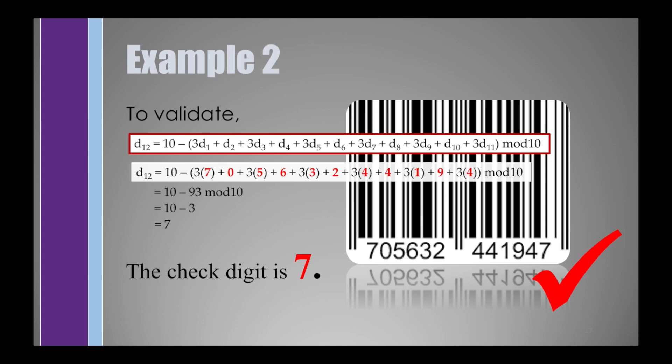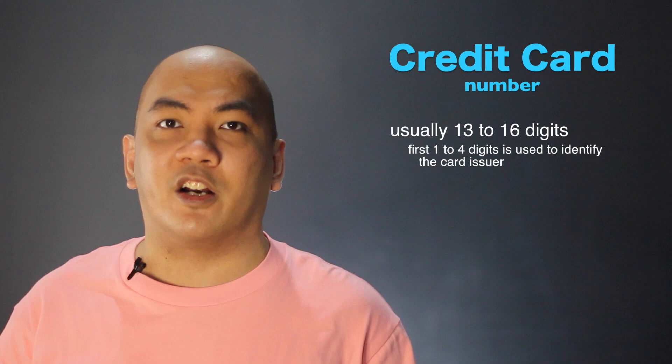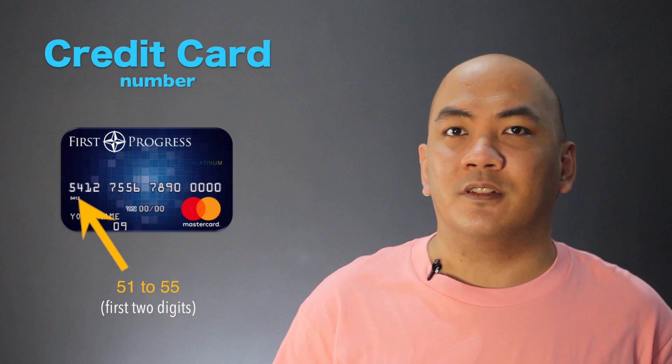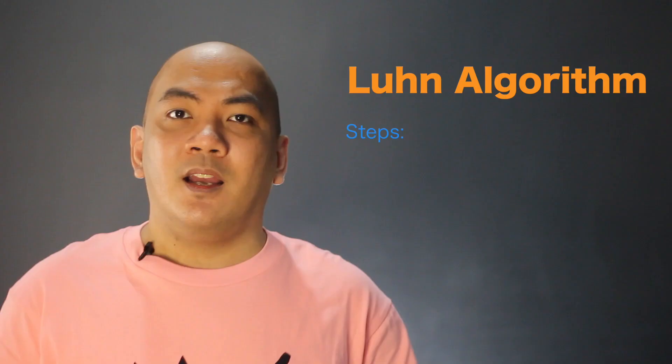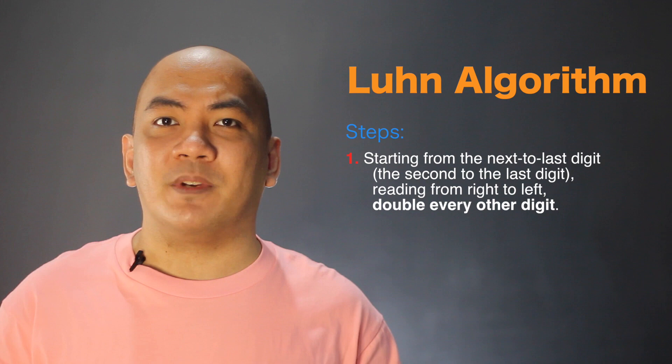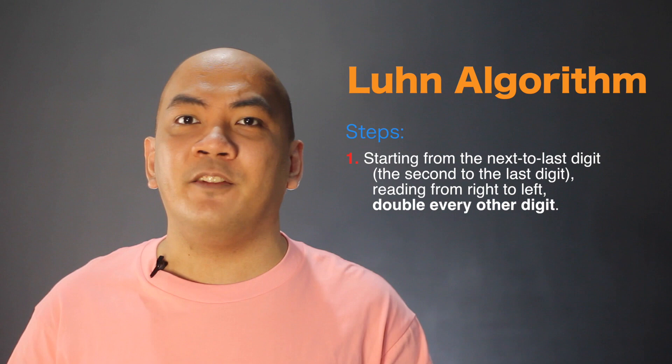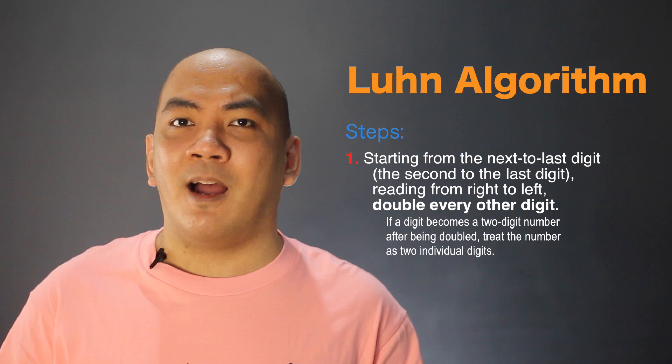A credit card number is usually 13 to 16 digits, where the first 1 to 4 digits identify the card issuer. For Mastercard, the first two digits are any number from 51 to 55; for Visa, the first digit is 4. To verify a credit card number, we apply the Luhn algorithm, also known as the Modulus 10 algorithm, named after IBM scientist Hans-Peter Luhn. Starting from the second-to-last digit and reading right to left, double every other digit; if doubling produces a two-digit number, treat its digits individually, then check if the total sum is zero modulo 10.